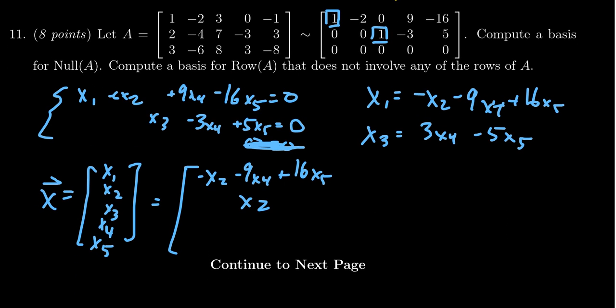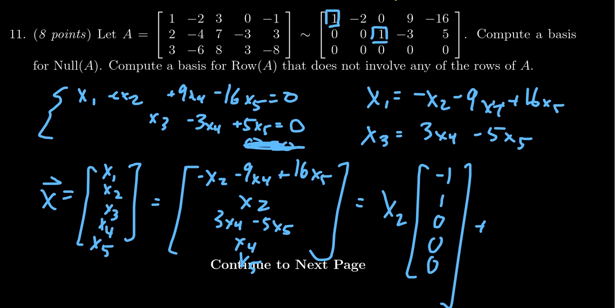The dependent variables were one and three so we're going to get negative x2 minus 9x4 plus 16x5, x2 is free so we'll leave it alone, x3 is dependent so we get 3x4 minus 5x5, and then we get x4 and then we get x5. If we peel this apart we're going to get x2 times negative one, one, zero, zero, zero, then we're going to get x4 times negative nine, zero, three, one, and zero.